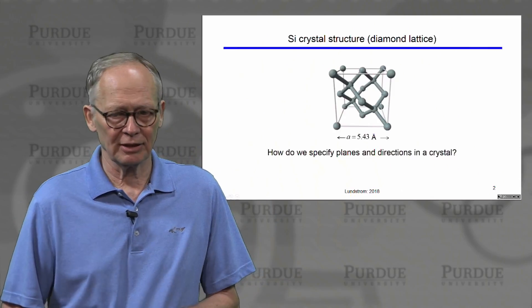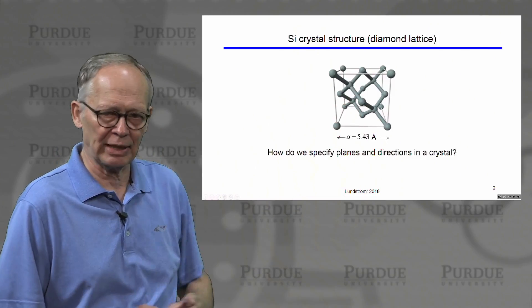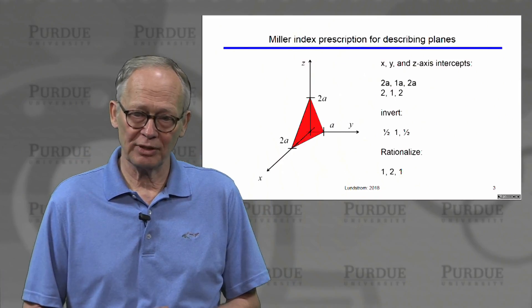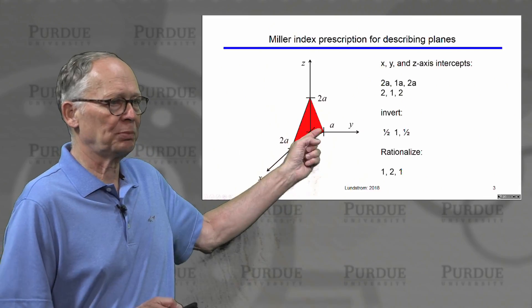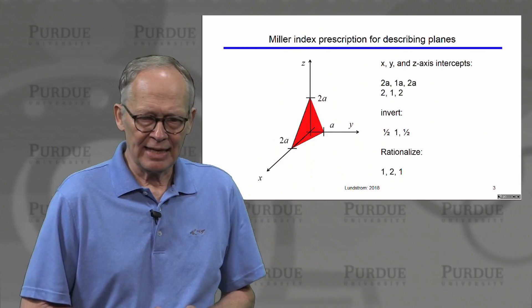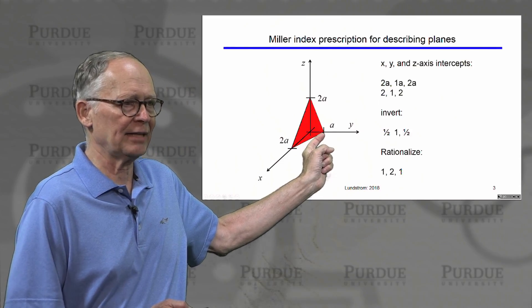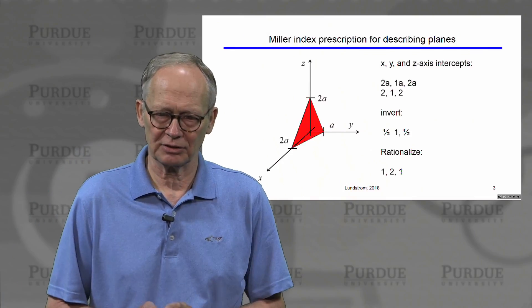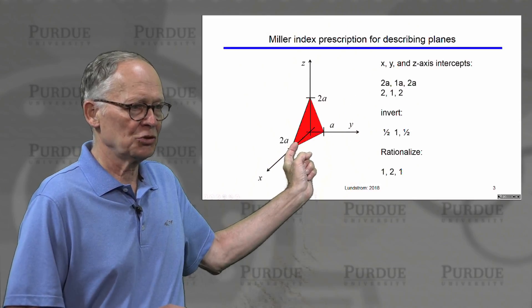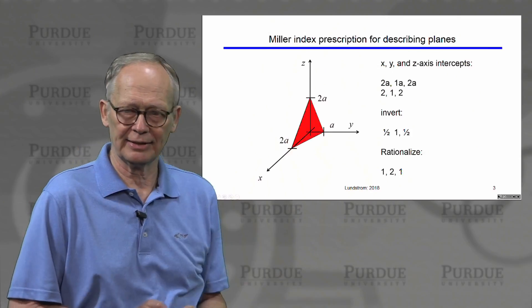Here is our silicon crystal, and the question is how do we specify the various planes and directions in a crystal like this? Here's a plane with the x, y, and z directions. I'm doing everything in terms of the lattice spacing A in the cubic crystal system. The x, y, and z intercepts are two A in the x direction, one A in the y direction, and two A in the z direction.